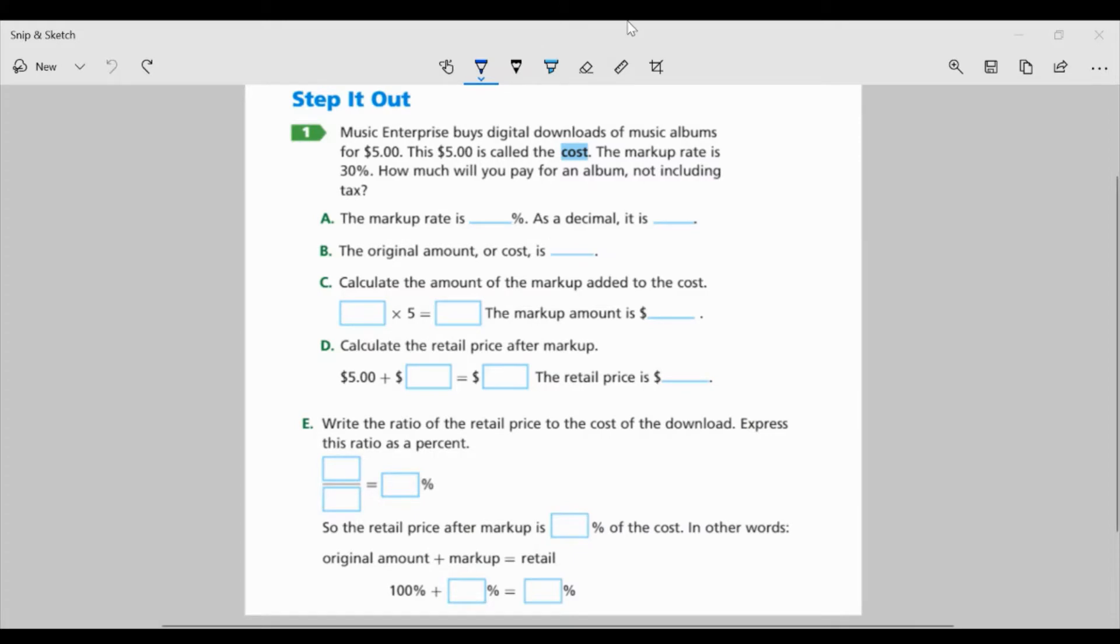So let's look at task one on page 63. Music Enterprise buys digital downloads of music albums for $5. This $5 is called the cost. The markup rate is 30%. How much will you pay for an album not including tax?